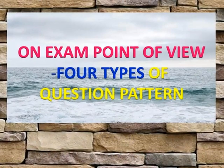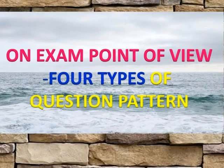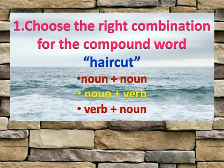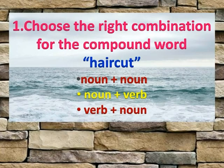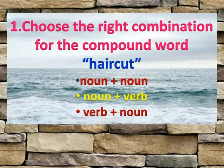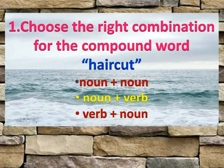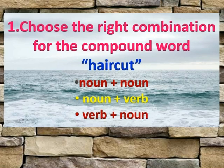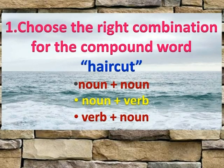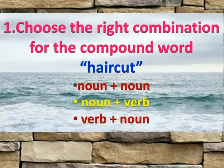From an exam point of view, the question pattern on compound words in multiple choice has four types. The first type is to choose the right combination for a given compound word — for example, 'haircut.' The choices are given as noun plus noun, noun plus verb, or verb plus noun. The right answer is noun plus verb, as 'hair' is a noun and 'cut' is a verb.